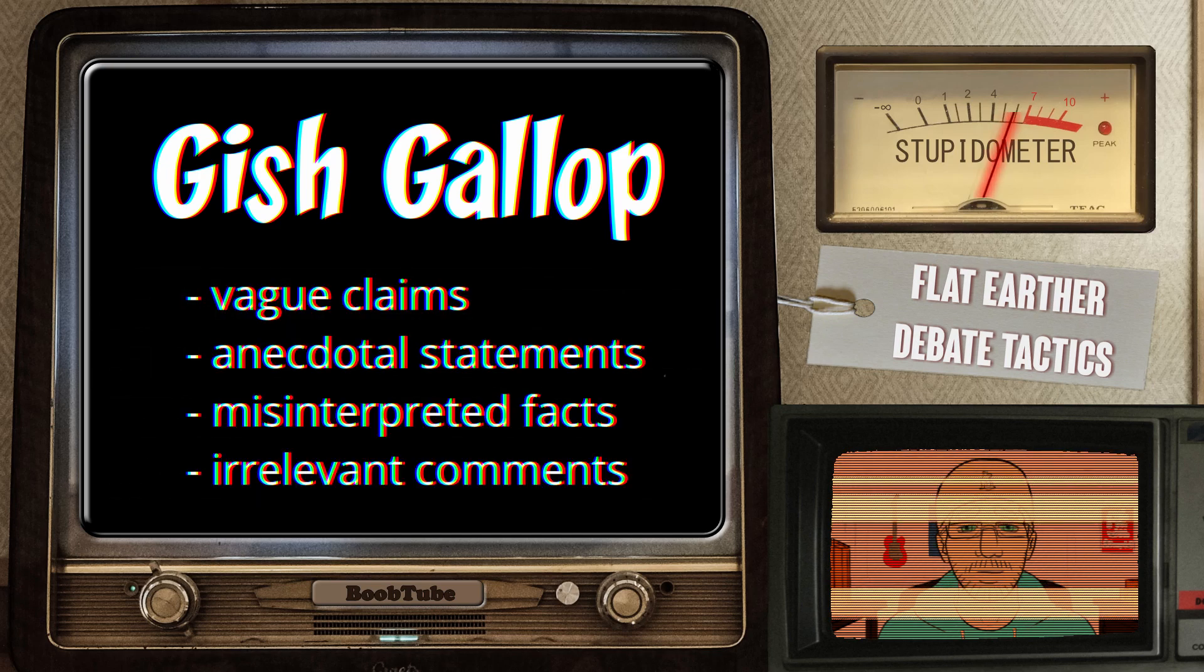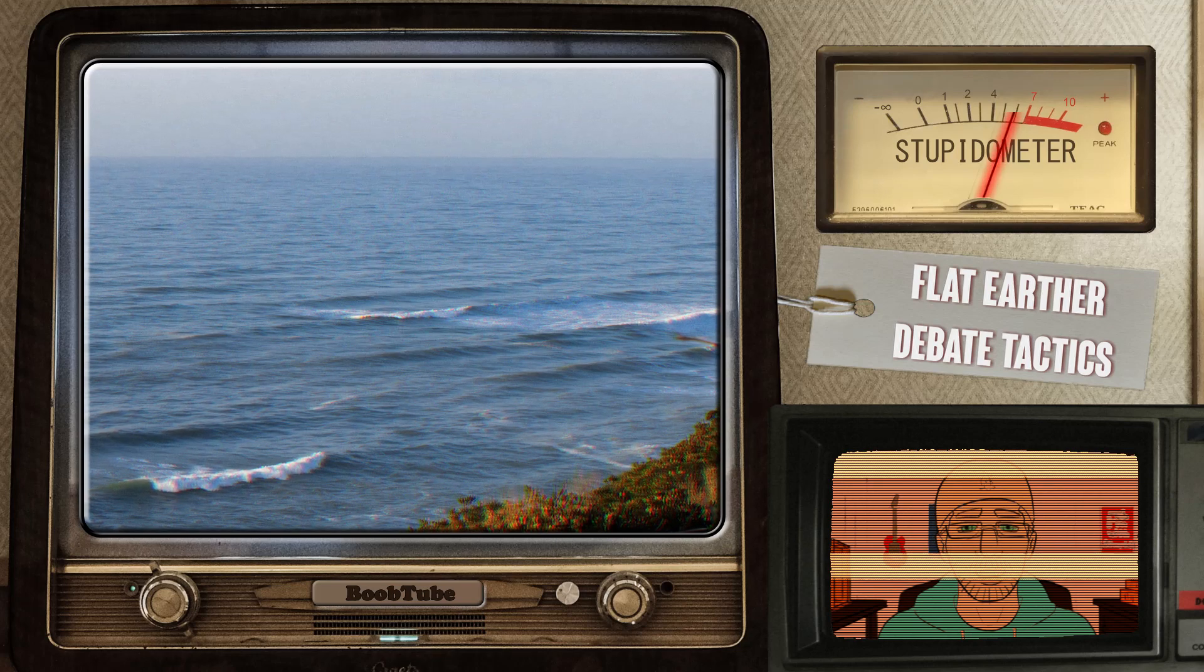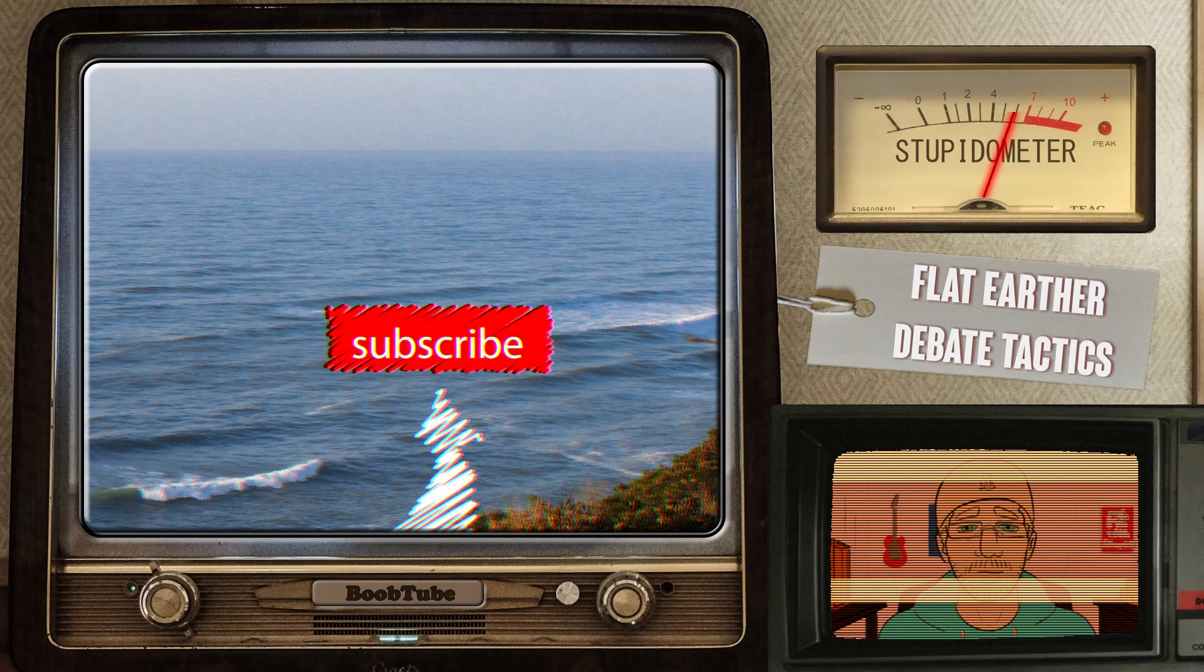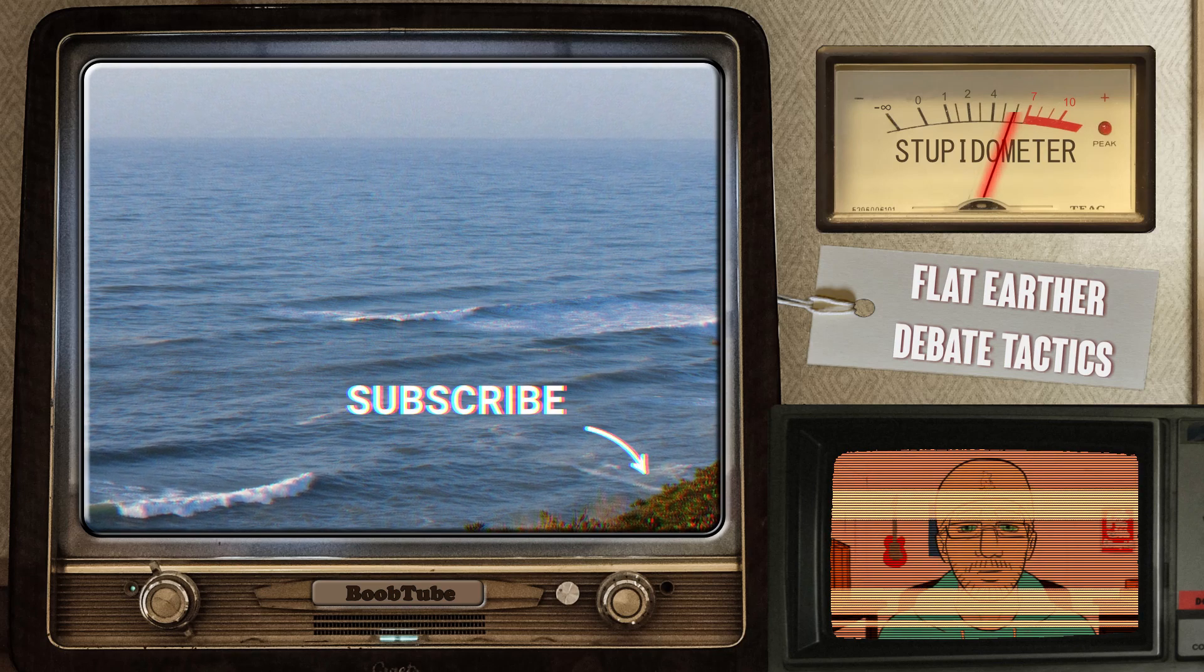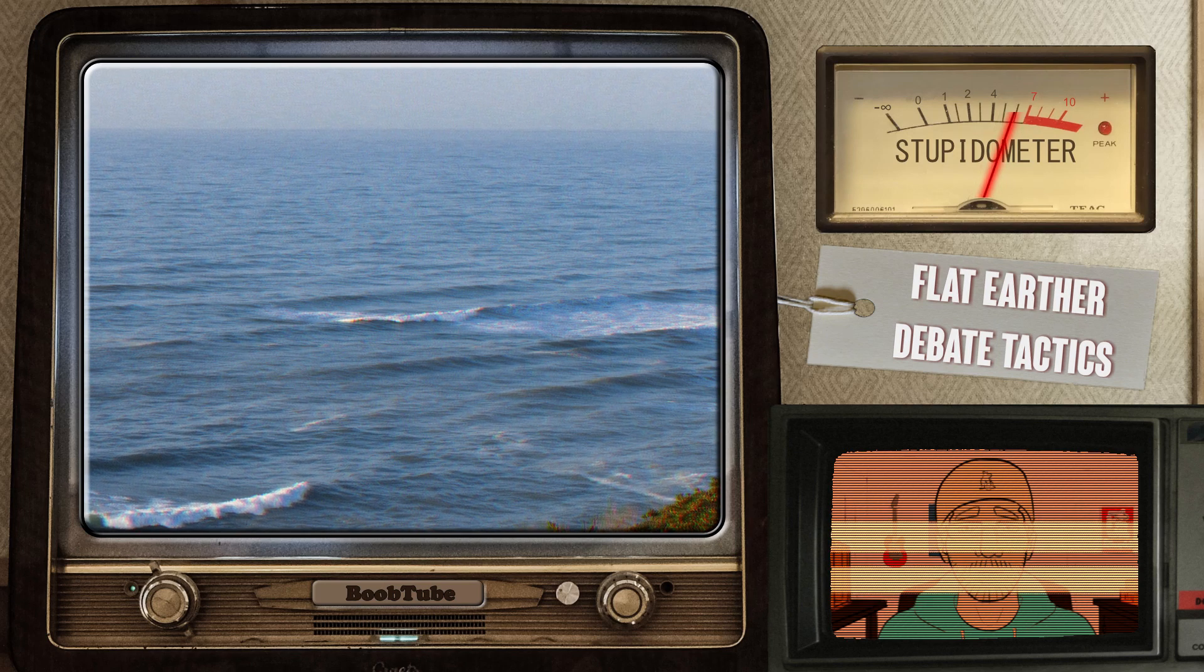Now, these arguments can be vague claims, anecdotal statements, misrepresented facts, and irrelevant comments. When the claims are generalized or vague, it can be difficult to refute. A statement like 'many experiments show that the Earth is not moving' is difficult to refute, as without more details, we don't know exactly which experiment they are talking about. We then have to summarize all the experiments we think they might be thinking of. Maybe Bedford level experiment, Michelson-Morley experiment, or maybe Airy's failure, who knows?